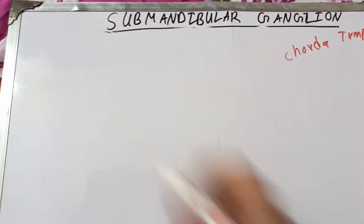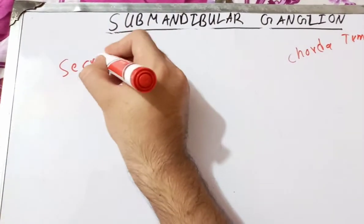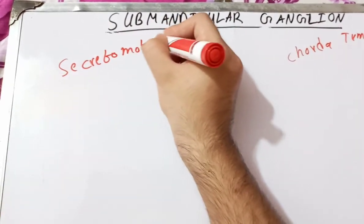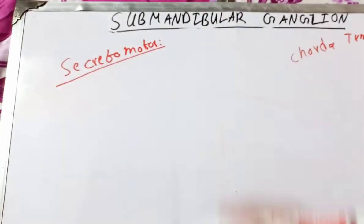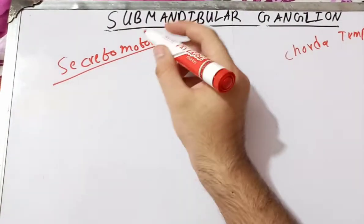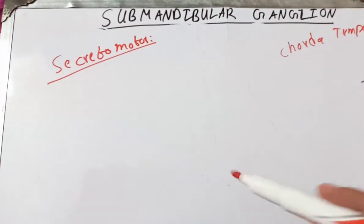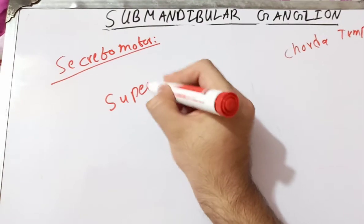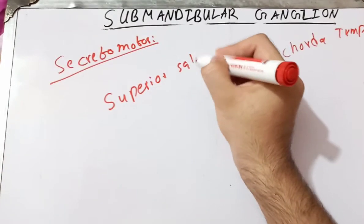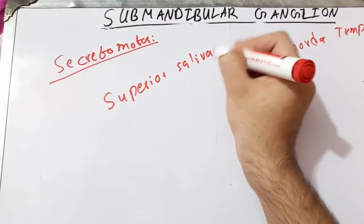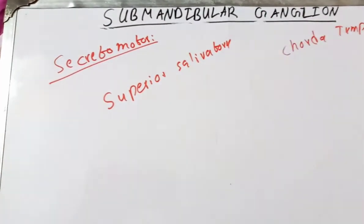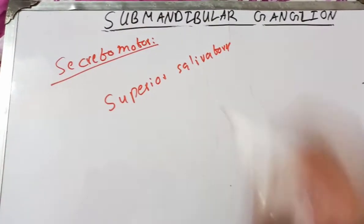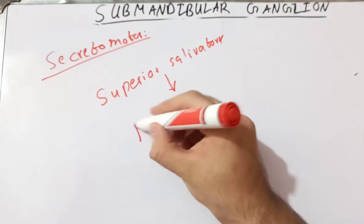Now let's talk about the secretomotor supply to the submandibular salivary gland. You have to remember that the secretomotor supply to the submandibular and sublingual salivary glands comes from the superior salivatory nucleus, which is located in the pons. From the superior salivatory nucleus, fibers enter the nervus intermedius.